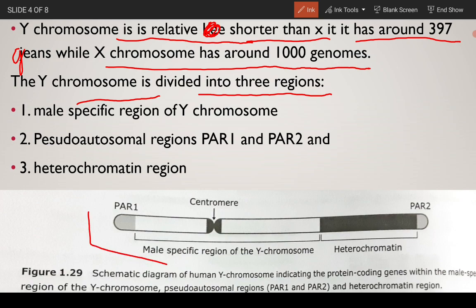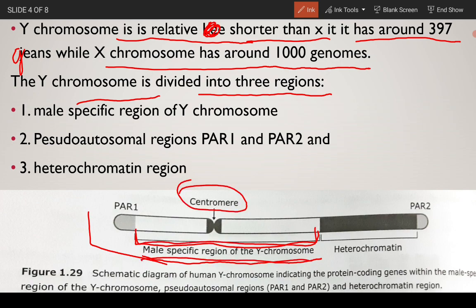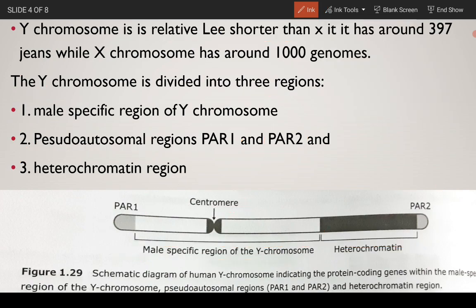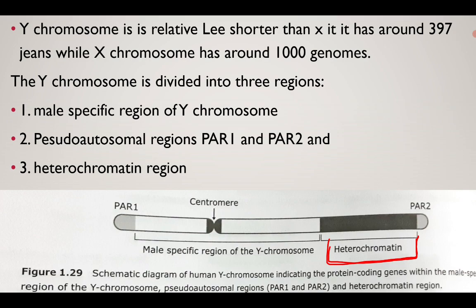Looking at the Y chromosome schematic diagram, you can see it is divided into three regions. The first is the male-specific region of the Y chromosome (MSY), which also includes the centromere. The second part consists of pseudo-autosomal regions PAR1 and PAR2, located at opposite ends of the chromosome. The third is the heterochromatin region, present on the longer arm of the Y chromosome.